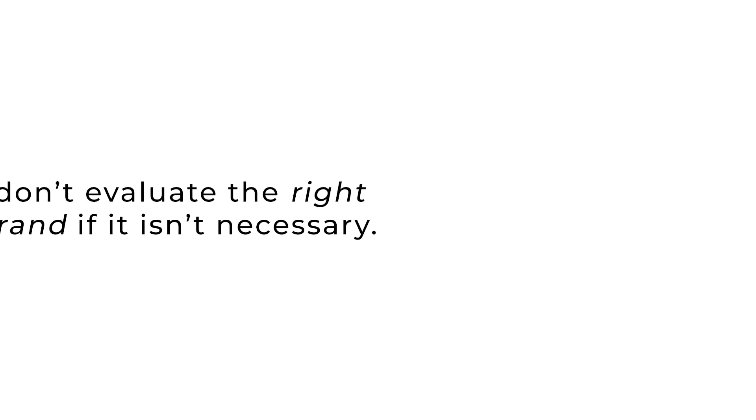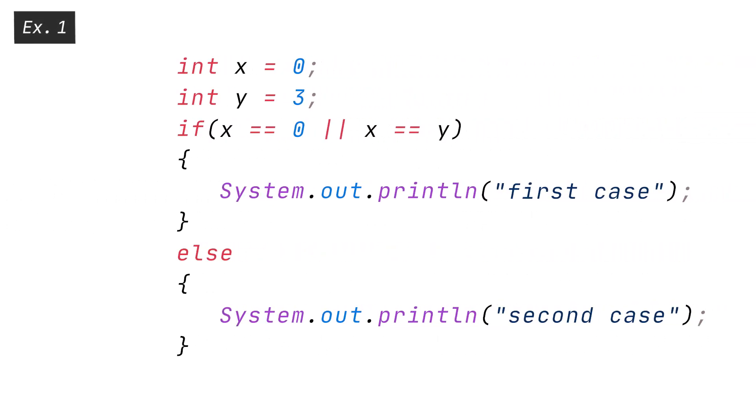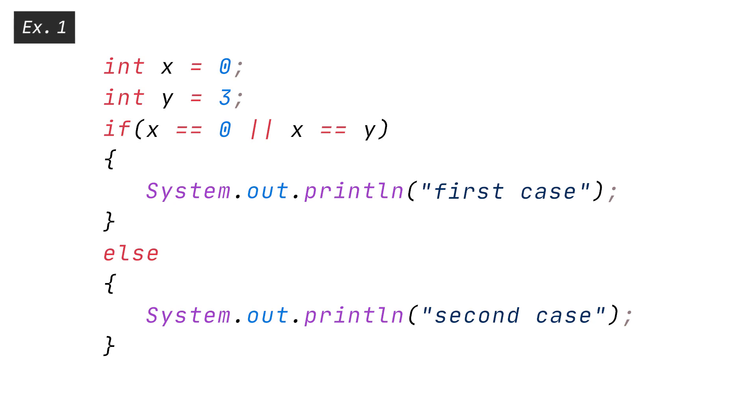Now, consider this example. X equals 0, Y equals 3. If X equals equals 0, OR, X equals equals Y, print first case, else print second case.